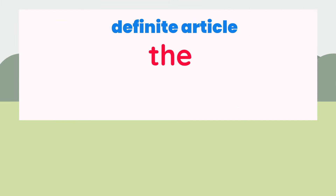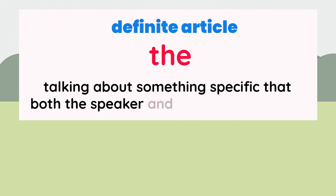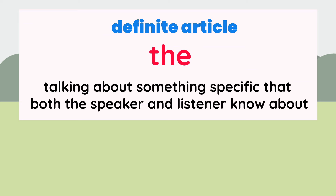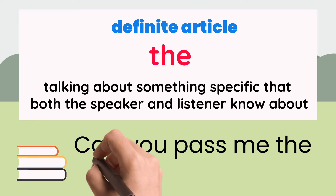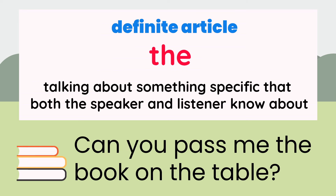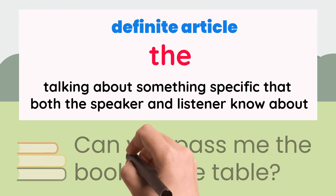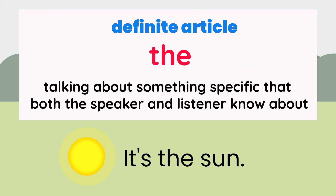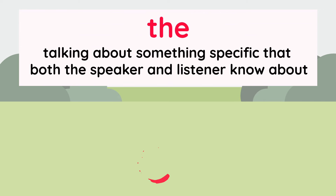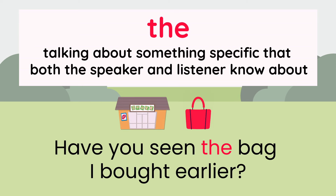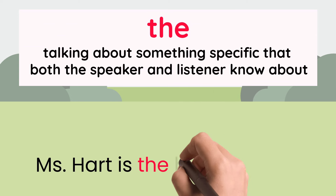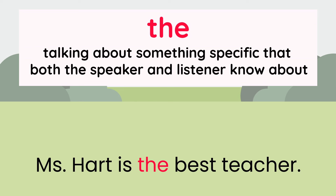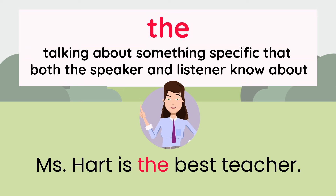Now let's talk about the. We use the when we're talking about something specific that both the speaker and listener know about. For instance, can you pass me the book on the table? We know which book we're talking about. It's the sun — there's only one sun in our solar system. Have you seen the bag I bought earlier? We're talking about a specific bag, not just any bag, so you have to use the word the. Miss Hart is the best teacher — again, we're talking about a specific teacher, not just any teacher.